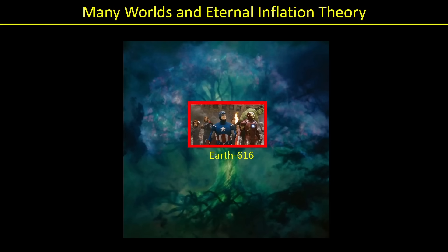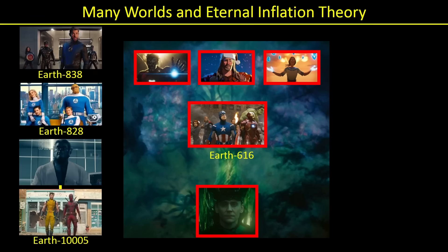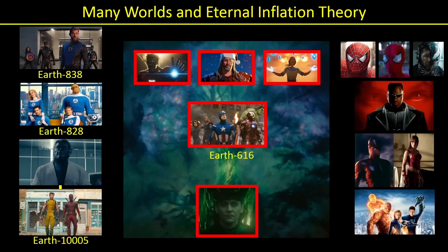Loki's tree is obviously Earth 616, with Loki sitting at the bottom giving it life, and all the branches are the What-If branches — that is the many worlds theory. Then eternal inflation is where we get the other universes: 838, 828, 10005, the Spider-Man movies, Daredevil, Blade — all of these are separate universes, the eternal inflation part of the theory. That's how the many worlds and eternal inflation come together, and that's why we're going to see incursions happening between these universes and the tree.